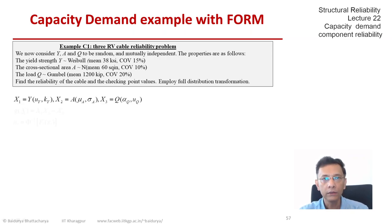Let us call X1, Y or Y X1, A X2 and Q X3. Our limit state therefore becomes X1, X2 minus X3. So it's a simple looking limit state.